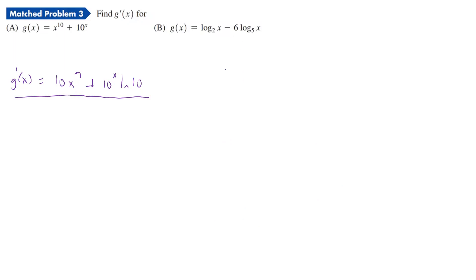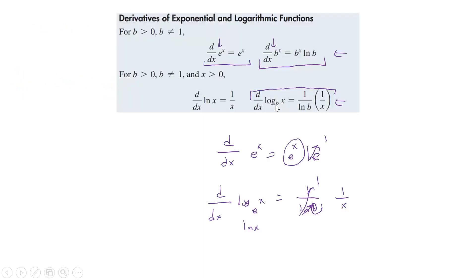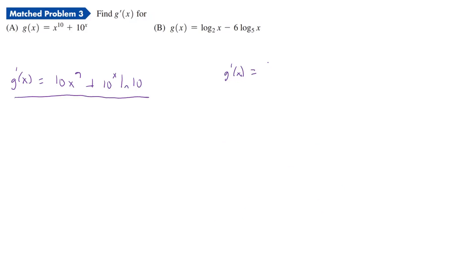All right. What about this one, g prime of x? Now we have log base 2, log base 5. And so what we have to do is we have to use the second formula. We have to use this one. Log base 2 and 5. So it's going to be 1 over ln of b times 1 over x. So we're going to have 1 over ln of 2 times 1 over x, and then we're going to have minus 6 times 1 over ln of 5 times 1 over x.